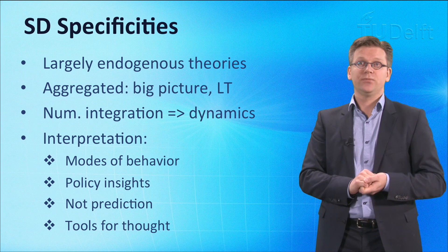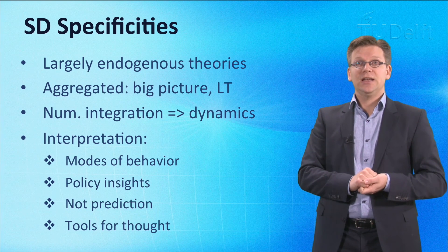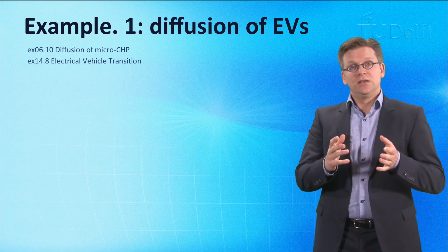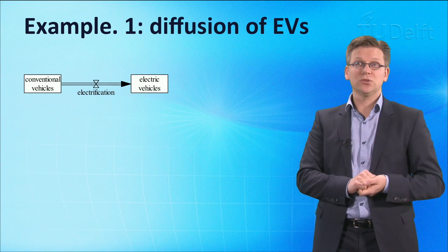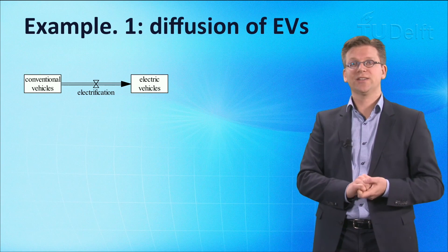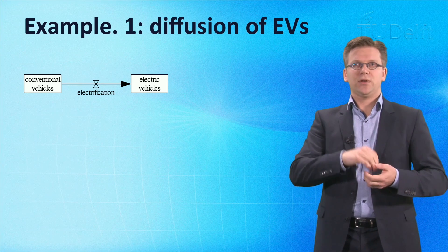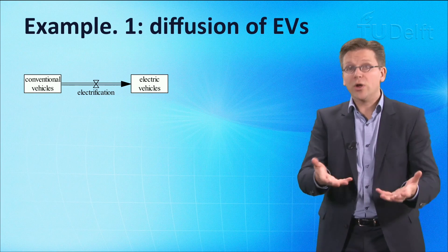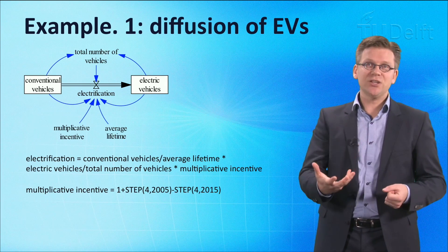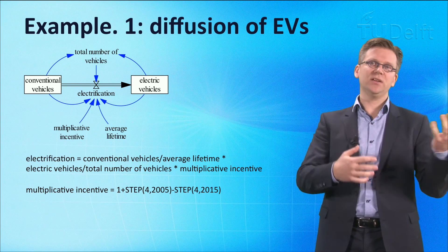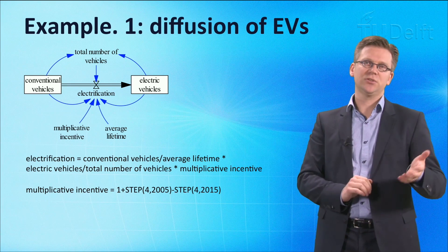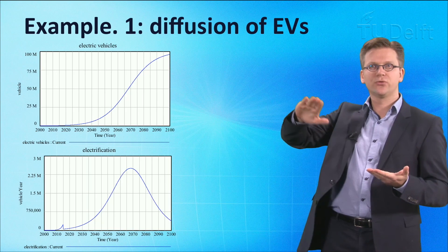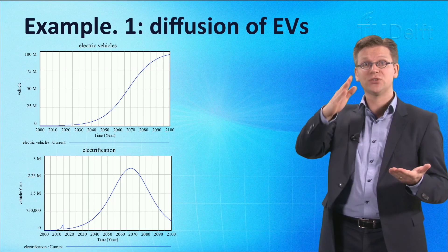Let me give you two examples now — a very simple example first, and then a more advanced one. Let's make a very simple model about the electrification of the European car fleet between the years 2000 and 2100. At the start, there are nearly 100 million conventional vehicles and only 2000 electrical vehicles. Owners of electric vehicles stick to their electric vehicles, and at the end of the average lifetime of a conventional vehicle of say 10 years, conventional vehicle owners may consider buying a conventional or an electric vehicle. Suppose that the electrification process depends on some incentive — say, this incentive makes electric vehicles five times more attractive between 2005 and 2015. Simulating this very simplistic model, we obtain the S-shaped growth of the stock of electrical vehicles, following the electrification process displayed below.